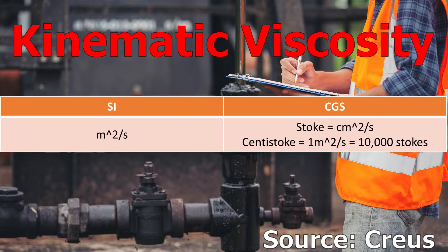Kinematic viscosity is the quotient between the dynamic viscosity and the density of the fluid. Its unit in the international system is the square meter per second, and in the CGS system the square centimeter per second, called the stoke. For smaller values, the centistoke is used.